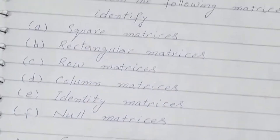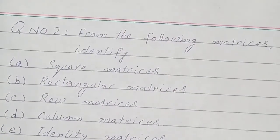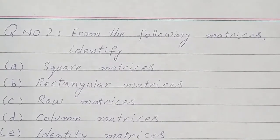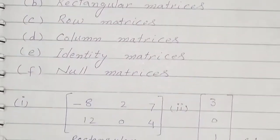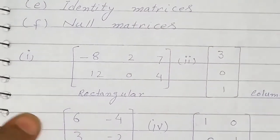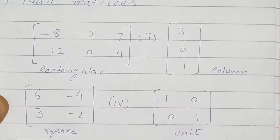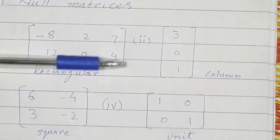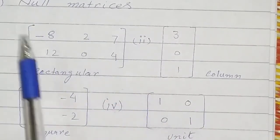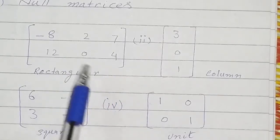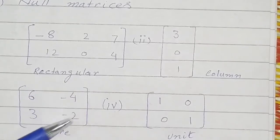Now we go to question number two, which says: from the following matrices, identify square matrices, rectangular matrices, row matrices, column matrices, identity matrices, and null matrices. This matrix has two rows and three columns. Since the number of rows and the number of columns are not equal, the matrix is called a rectangular matrix.